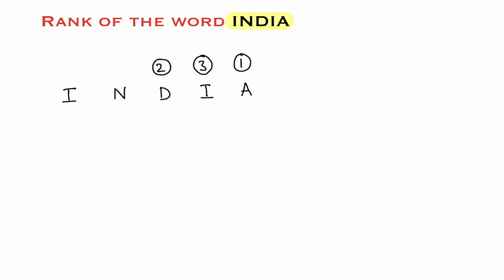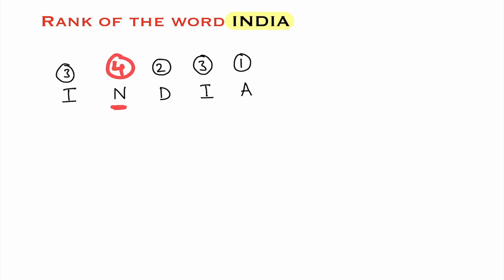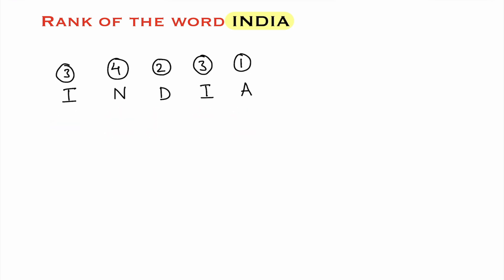You observe here that I is repeated two times. I is number three here, so here also you write three. Now obviously the remaining letter will be four. I have given numbers to these letters as per alphabetical order. As I is repeated two times, I give the same number three to both I's.